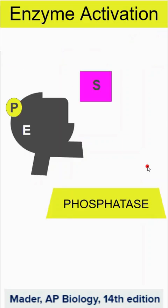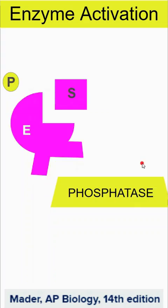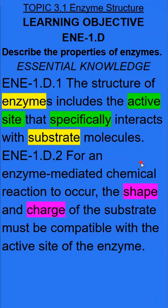We can activate enzymes not only through adding phosphate groups, but by removing them. Our enzyme has already been created through transcription and translation; however, it's in an inactive state until the phosphate is removed, and then the active site is compatible with the substrate and products can be produced. This reinforces the idea of the lock and key model — enzymes have to be specific to their substrates, and the active site has to be the right shape and charge for the substrate.